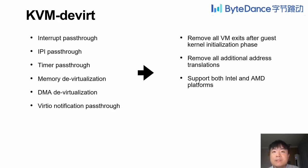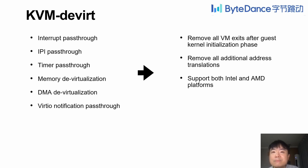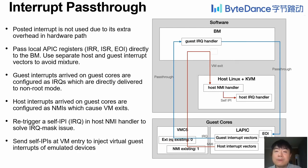So we introduce KVM Divert, which runs virtual machines for physical resource partition instead of security isolation on both Intel and AMD platforms. It leverages a set of pass-through techniques to eliminate all VM exits after the guest kernel initialization phase. Additional address translations are also eliminated by its memory devisualization and DMA devisualization techniques. As a result, a VM for a single partition can achieve the same performance as a native host, and can even perform better than native host for multiple partitions, since it uses separate guest kernels to resolve the contention problems.